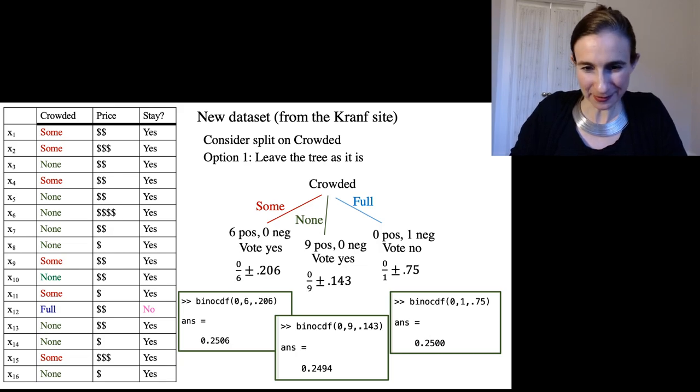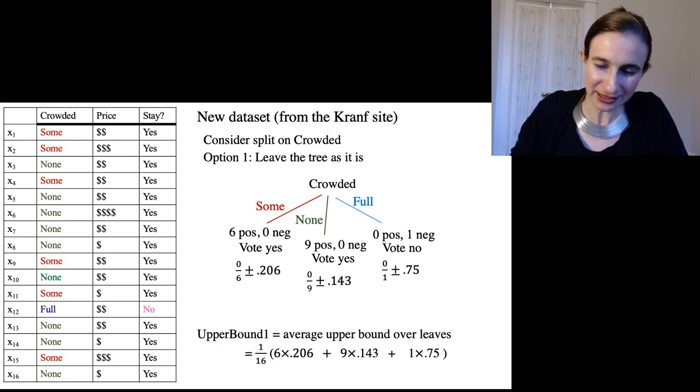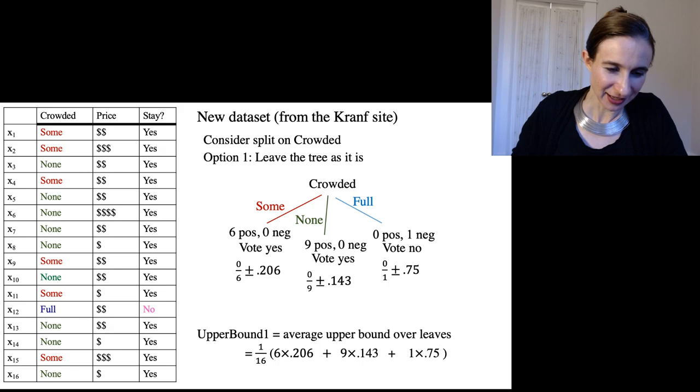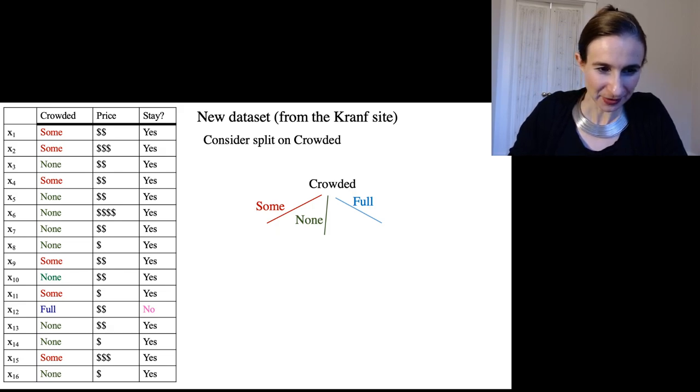Okay, so I have my upper confidence bounds. Now, let's take the average of them. And it's of course a weighted average. And I weight by how many points go into each branch. And that's my average.